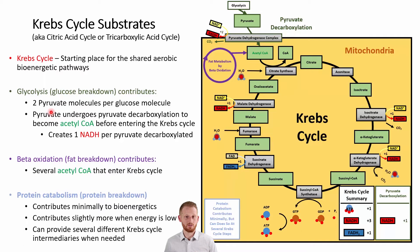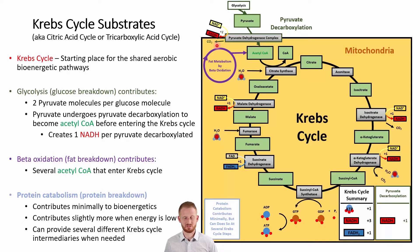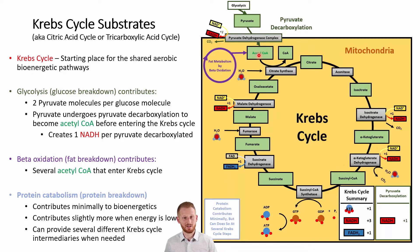Glycolysis contributes two pyruvate molecules per glucose molecule broken down. A pyruvate molecule goes through the process of pyruvate decarboxylation, and in doing that we create an NADH molecule, we produce a CO2 — this is the first time we see CO2 produced in bioenergetics outside of acid-base buffering in the blood — and we also produce an acetyl-CoA molecule, which is typically considered the starting place for how carbohydrates contribute to the Krebs cycle.